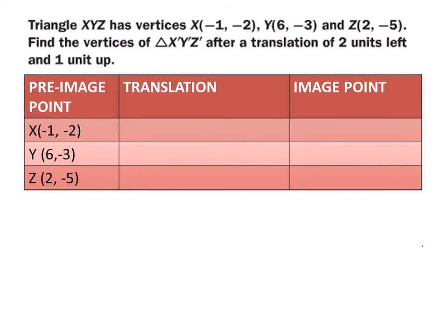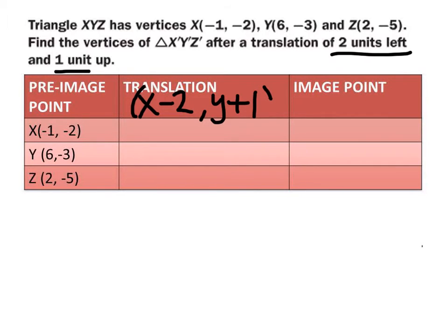Now let's look at an algebraic approach where no graph is needed. If we translate two to the left, we subtract two from each x-value. We're also moving one unit up, so we add one to each y-value. The translation rule is: x becomes x minus two, and y becomes y plus one.